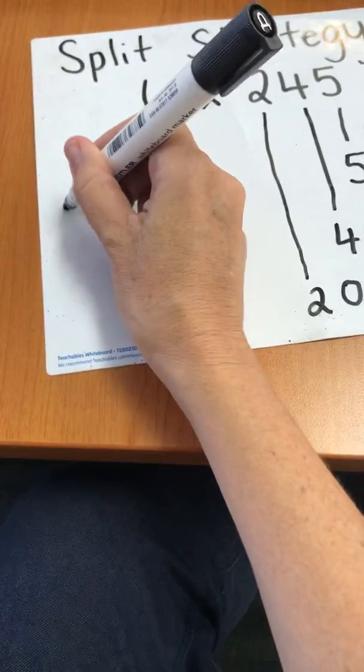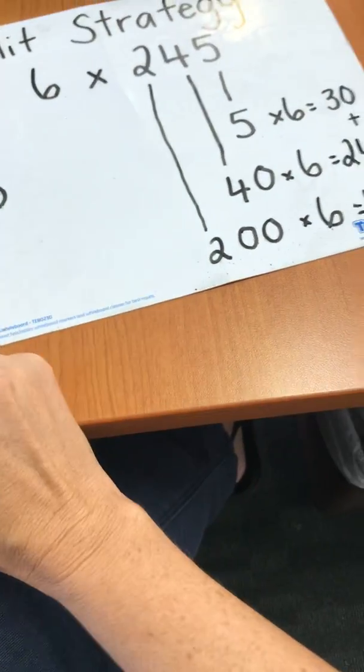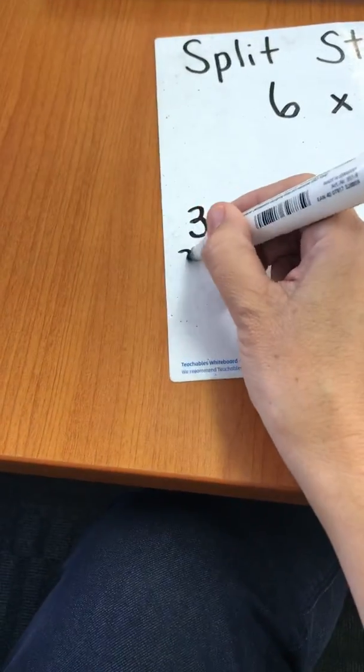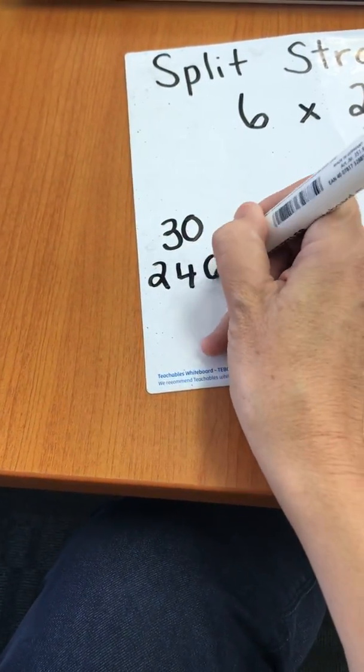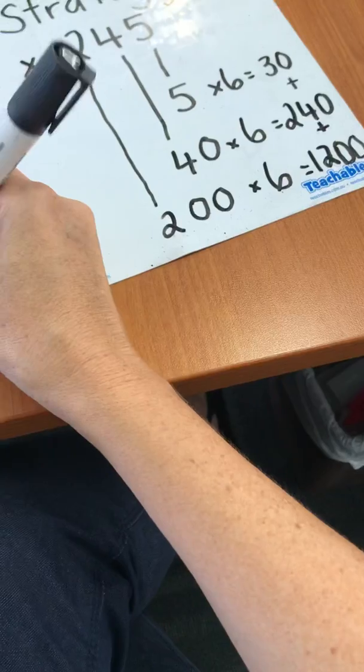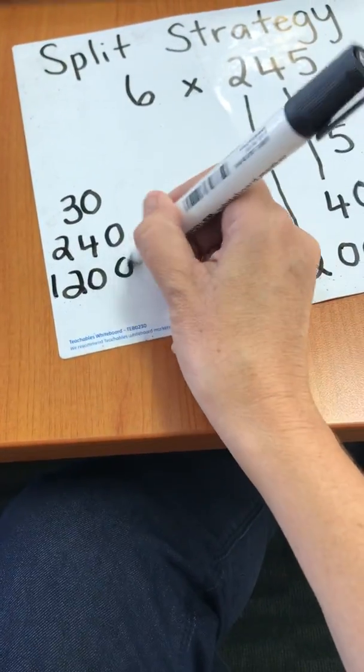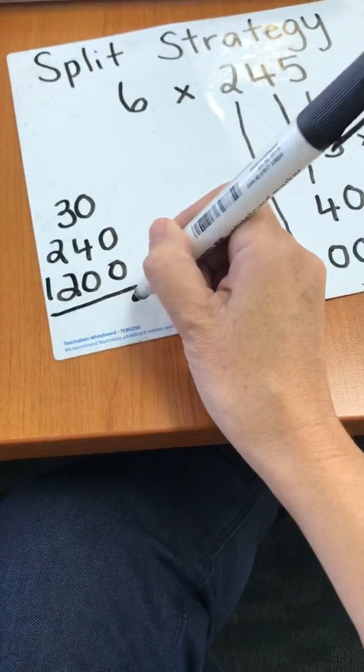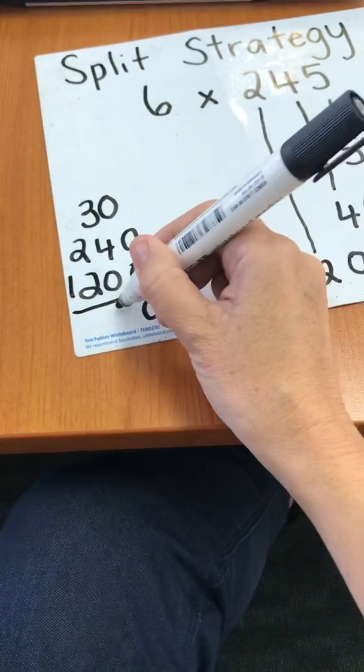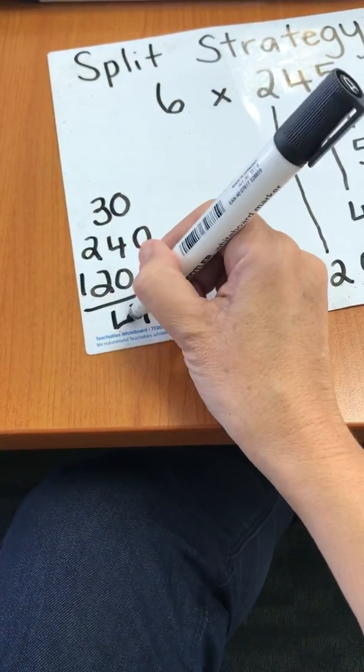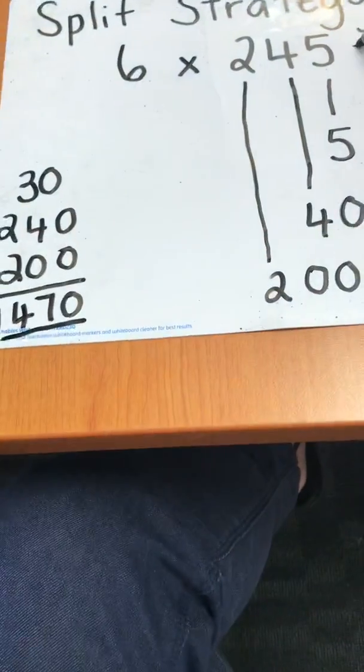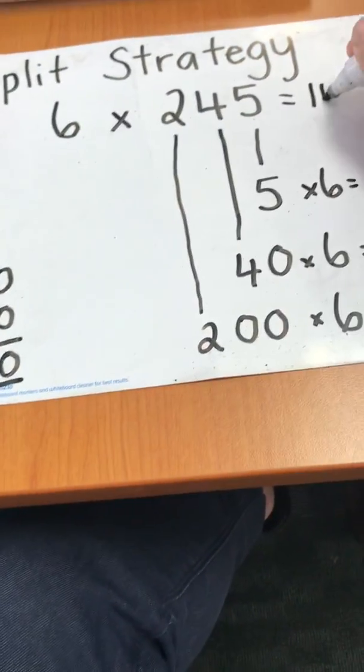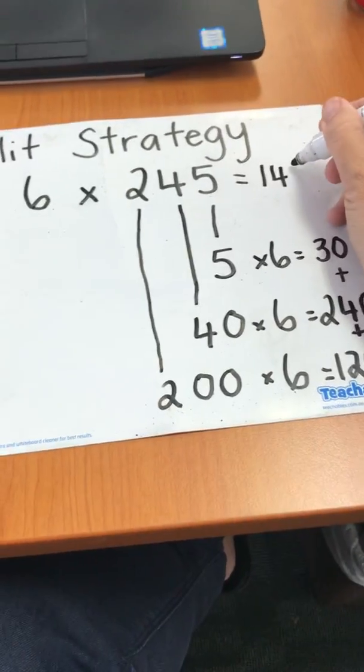So 30 plus 240 plus 1200. 0, 3 and 4 is 7, 2 and 2 is 4. Your answer is 1470.